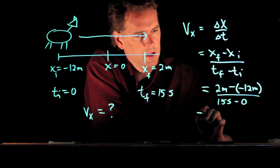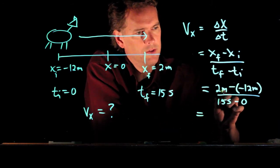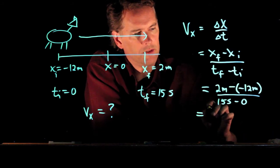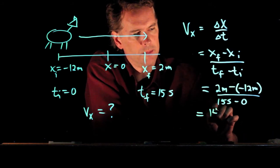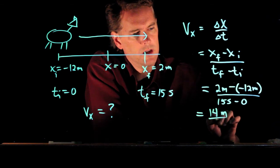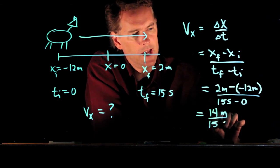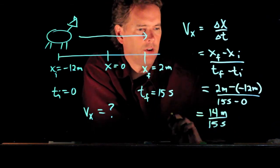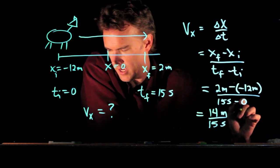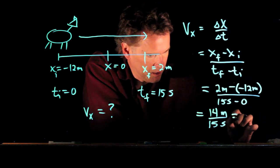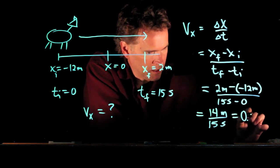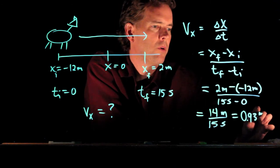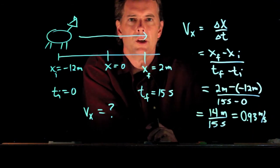And so we can calculate the speed. 2 minus negative 12 is the same as plus. So up top we get 14, down below we get 15. Units are meters per second. And 14 over 15, if you check in your calculator, is 0.93 meters per second.